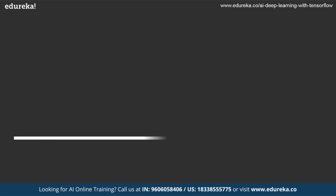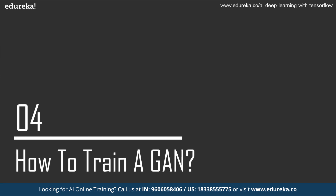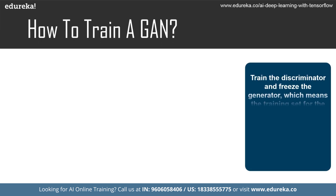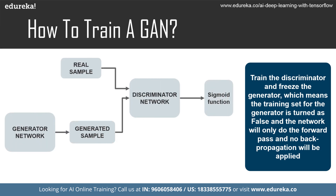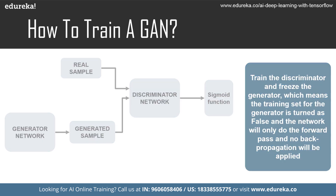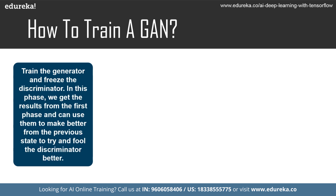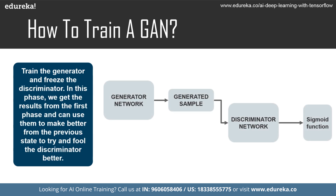GAN training happens in two phases. In the first phase, we train the discriminator and freeze the generator — meaning the generator's trainable flag is set to false, so only a forward pass occurs with no backpropagation. The discriminator is trained on real data to predict them correctly, and on fake data to identify them as fake. In the second phase, we train the generator and freeze the discriminator, using results from the first phase to improve the generator and better fool the discriminator.